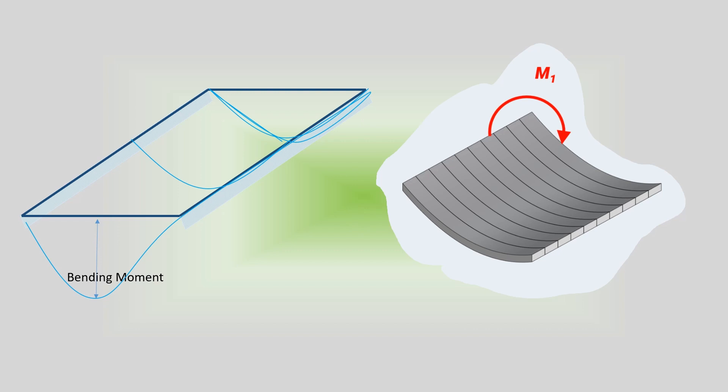In one-way slab design, the maximum bending moment is calculated corresponding to the design load, and the cross-section of the slab is calculated to resist this expected bending moment.